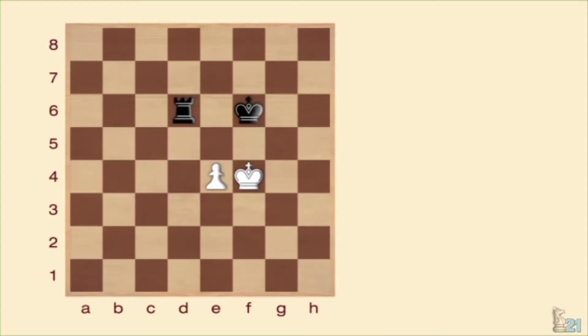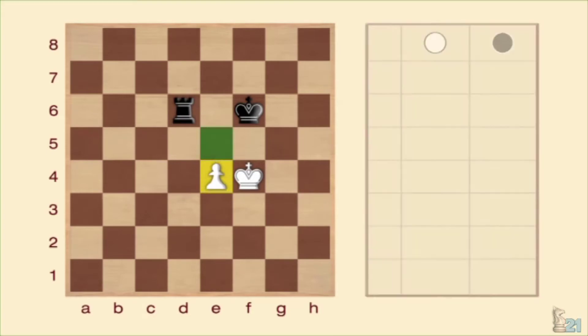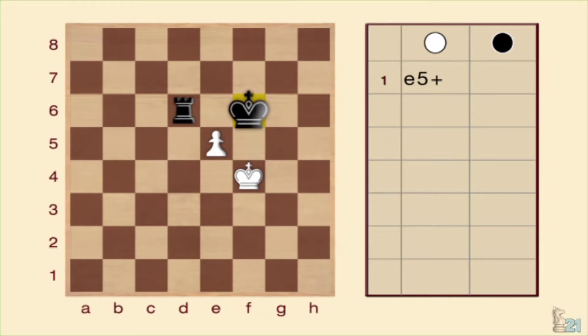El ataque doble del peón es conocido por nombres como horquilla o gafas. Para que el peón pueda realizar esta extraordinaria jugada, debe avanzar amenazando dos piezas enemigas y capturar la que no escape. En este caso, la torre, puesto que al rey no le queda otra posibilidad que alejarse.